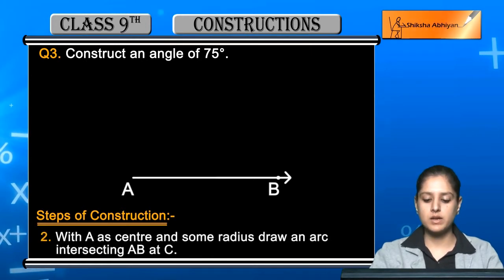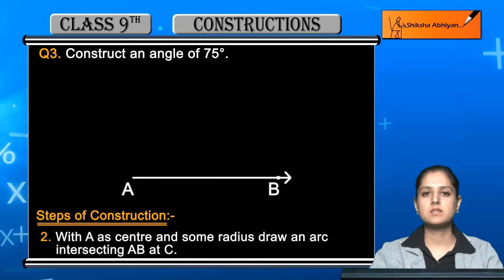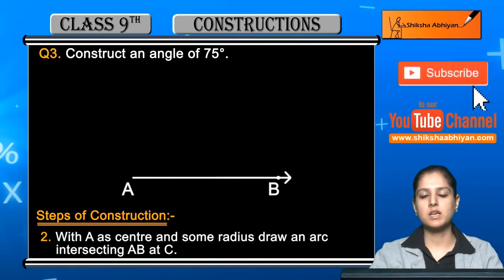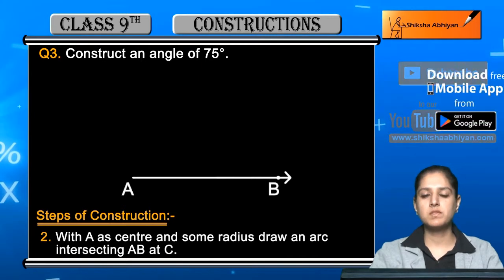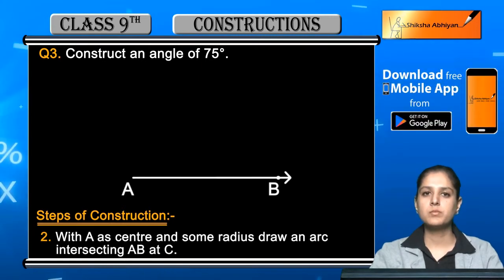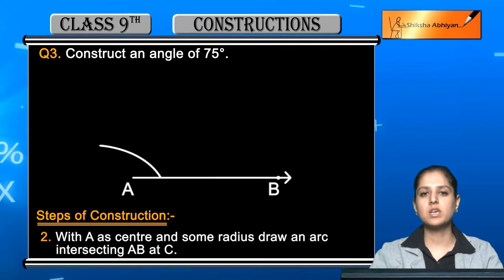Now the second step is with A as center and some radius, draw an arc intersecting AB at C. Take a center and open some convenient radius of the compass and draw an arc which will intersect AB to point C. Make the arc big so that it will intersect AB to point C. You will use this arc in further steps.